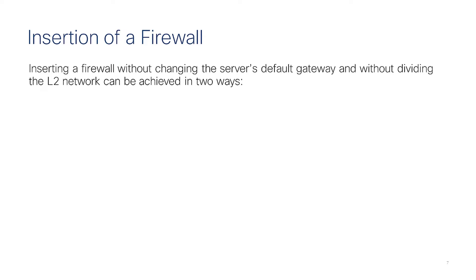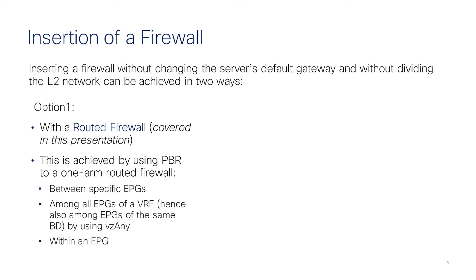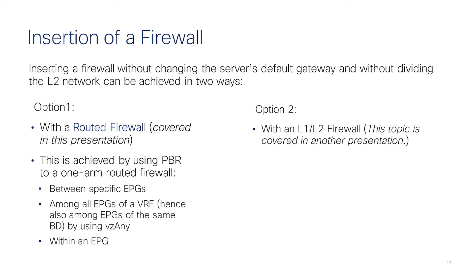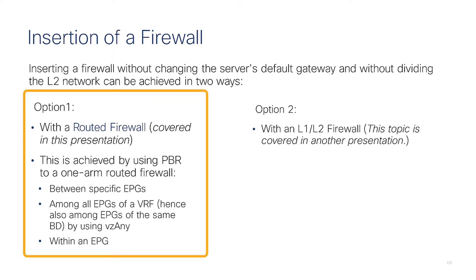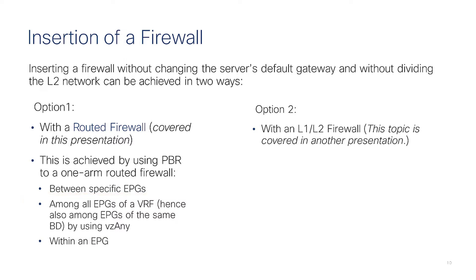There are two main options to insert a firewall in a Layer 2 network. One is to use a Routed Firewall with ServiceGraph Redirect in 1-arm mode, and the other option is to insert the firewall in Layer 1 or Layer 2 mode — but that is the topic of a different presentation. This presentation covers insertion of the firewall in Routed Mode between specific EPGs, among all EPGs of a given VRF, or even within a single EPG.